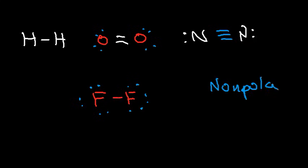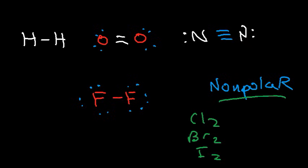They're nonpolar because they share electrons equally. Whenever you have equal sharing of electrons, it's nonpolar — it's electrically neutral overall. In a polar molecule, one side is partially positive and the other partially negative. All diatomic same-element molecules — H2, O2, N2, F2, Cl2, Br2, I2 — are all nonpolar.